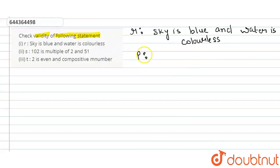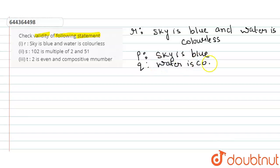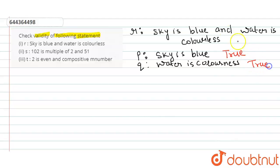The components are: P — 'sky is blue', and Q — 'water is colorless'. To check the validity of statement R, we need to check whether both P and Q are true or false. Sky is blue — true. Water is colorless — also true. Since this compound statement is connected by 'and', the whole statement is also true. So statement R is valid.